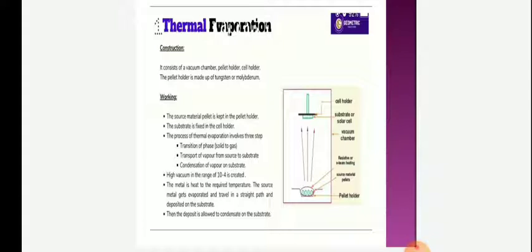Construction: It consists of a vacuum chamber, pellet holder, and cell holder. The pellet holder is made up of tungsten or molybdenum. Working: The source of material pellet is kept on the pellet holder. The substrate is fixed on the cell holder. The process of thermal evaporation involves three steps.